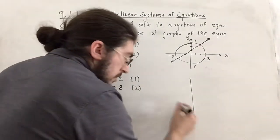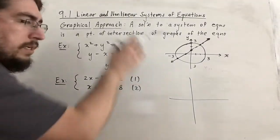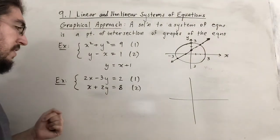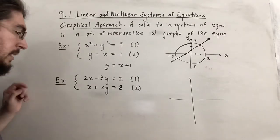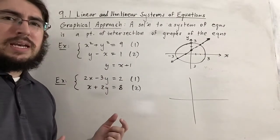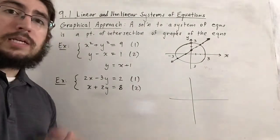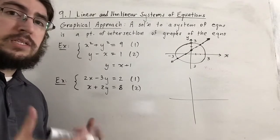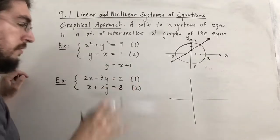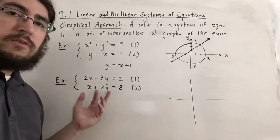We can graph each equation in the linear system — they're just lines — and try to pinpoint the solution. Substitution is actually the better approach post-graphing. Chapter 9.2 will hone in on more efficient solution methods. To graph, I'll find x and y-intercepts for equation 2: setting y=0 gives x=8, and setting x=0 gives 2y=8, so y=4.